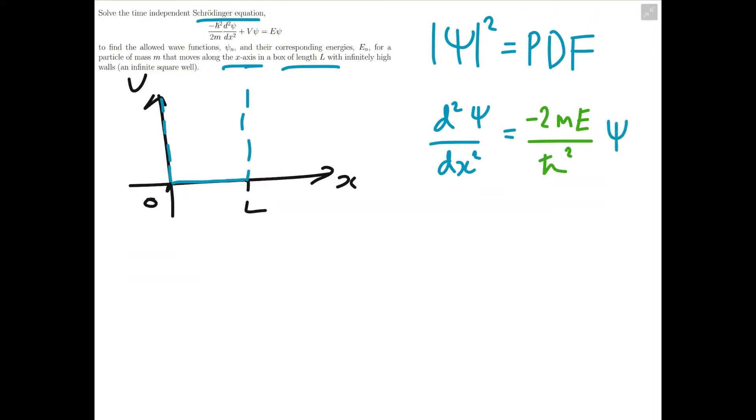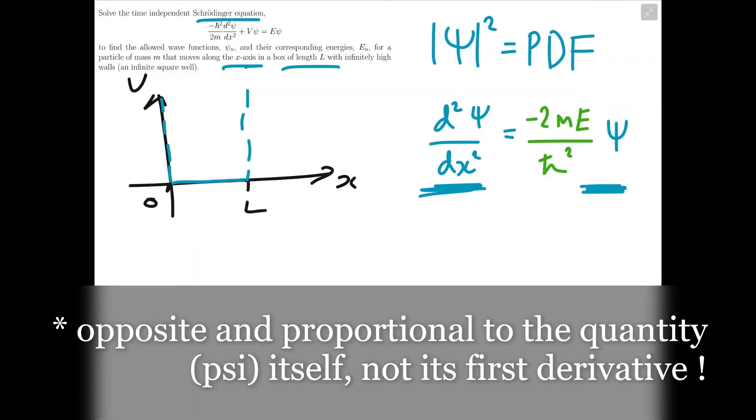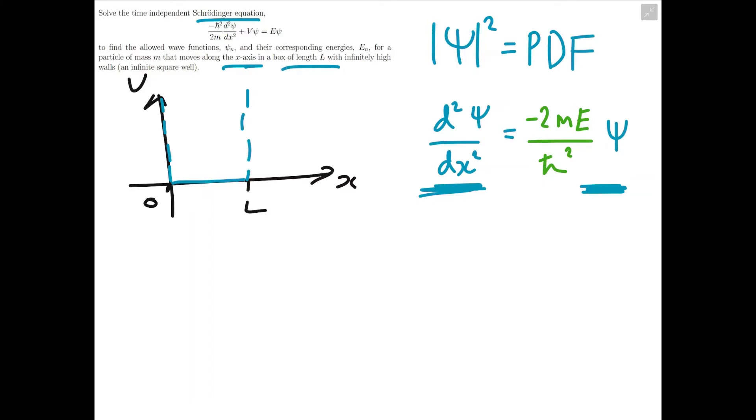So what we have here is pretty reminiscent of the simple harmonic motion equation, because you have the second derivative of a quantity being proportional and in opposite direction to the first derivative of that quantity, ψ. So we shouldn't be surprised if we end up seeing sines or cosines, because this is basically just the simple harmonic motion equation from classical mechanics.